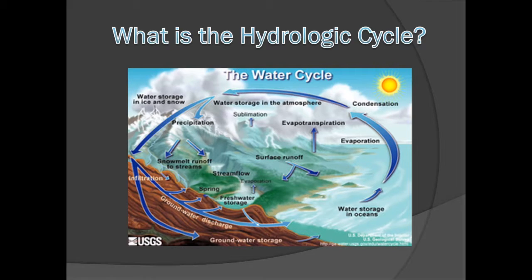The hydrologic cycle is a continuous process of water entering the atmosphere and returning to Earth's surface. Water enters the atmosphere through evaporation, evapotranspiration, or sublimation.